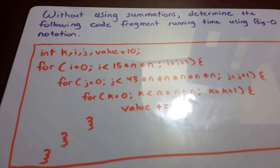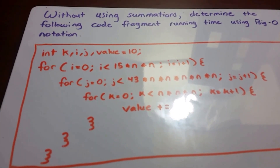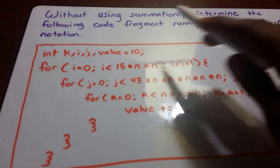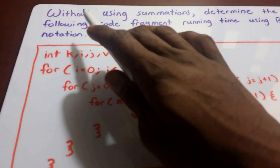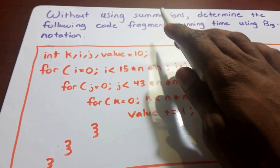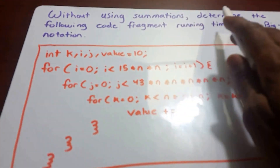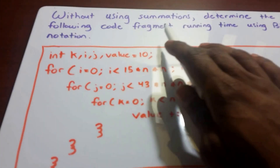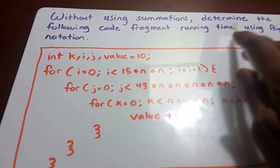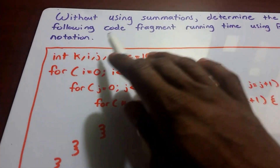Hey guys, and welcome to this video on algorithm analysis. So here I have our problem. It says, without using summations, determine the following code fragment running time using big O notation.